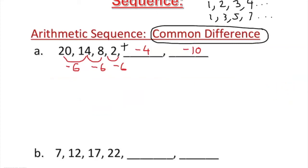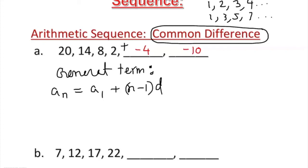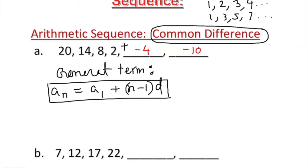Now I want to introduce something called the general term. The general term is: a sub n equals a sub 1 plus (n minus 1) times d, where d is the common difference. This is called the general term of the arithmetic sequence. I want to make sure we understand that if it is an arithmetic sequence, it must follow and work with this general term.